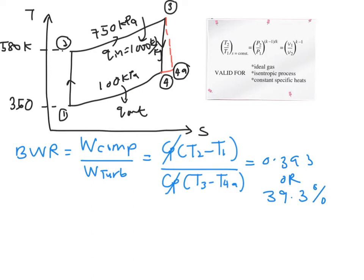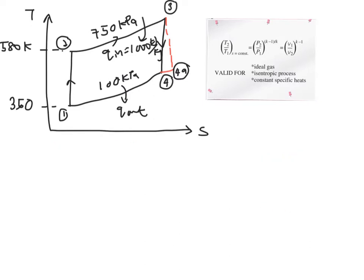This value simply means that the compressor is using 39.3% of the work produced from the turbine. Next is to find your thermal cycle efficiency, which is the definition of your work net over your Qin.